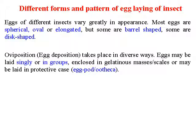Different forms and patterns of egg laying in insects: eggs of different insects vary greatly in appearance. The egg-laying pattern or the shape of the egg may differ from order to order. Most eggs are spherical, oval or elongated, but some are barrel-shaped, cigarette-shaped, or disc-shaped. Oviposition — the process of egg deposition — takes place in diverse ways. Eggs may be laid singly or in a group, enclosed in gelatinous masses or scales, or may be laid in a protective case called an ootheca or egg pot. In the case of grasshoppers and cockroaches, provisions protect the eggs in an ootheca. In Lepidoptera, they are laid singly or in groups covered with scales from the abdomen.